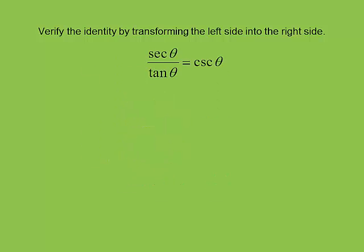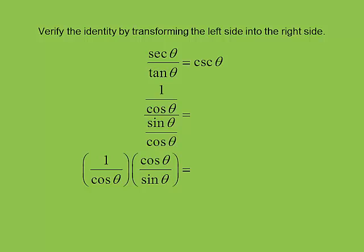Here's a good example of one where you want to turn everything into sines and cosines and multiply by the reciprocal of the denominator. I turn secant into 1 over cosine and tangent into sine over cosine, then multiply by the reciprocal of the denominator — cosine over sine. The cosines cancel, leaving 1 over sine. And 1 over sine is cosecant. Cosecant equals cosecant. This is a good example of how I want to see the homework completed: go straight down the page, leave the right side alone, and the last line shows the left side looks just like the right side.